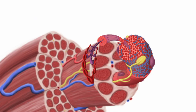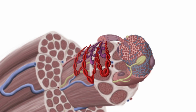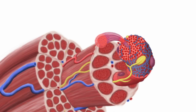Nearby myoblasts donate themselves to the repair and building of new proteins. When we say we need protein to build muscle, this is why. Amino acids form together to create the actin and myosin proteins that increase the strength and size of the myofibril. Continued stress to the muscle will also cause the increase of nutrient stores in the sarcoplasm.